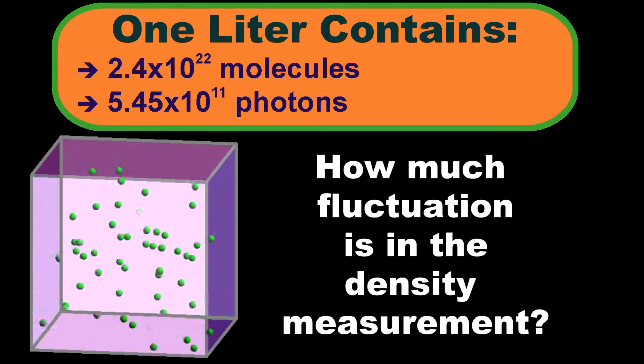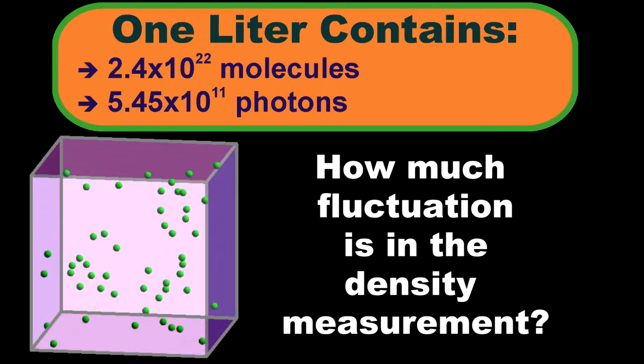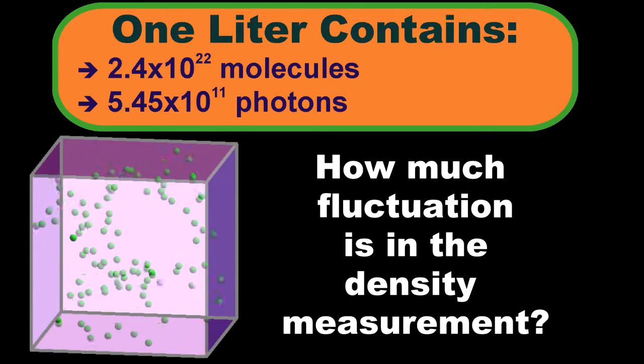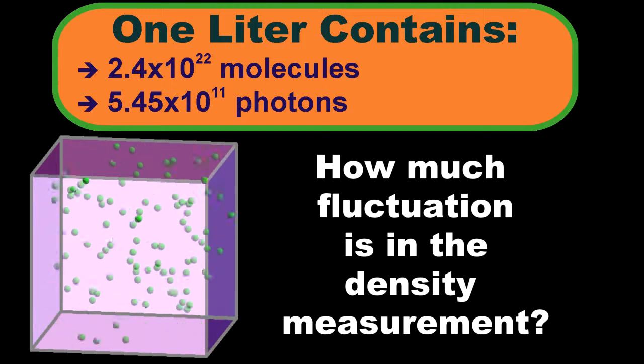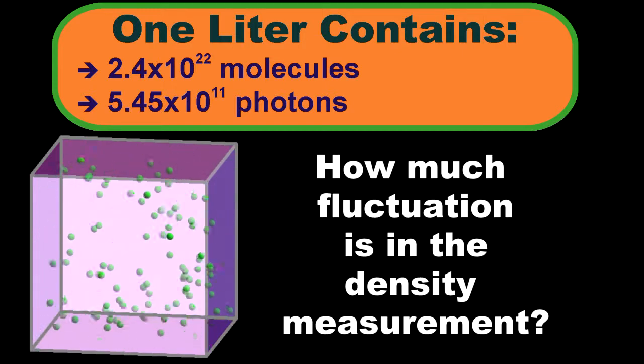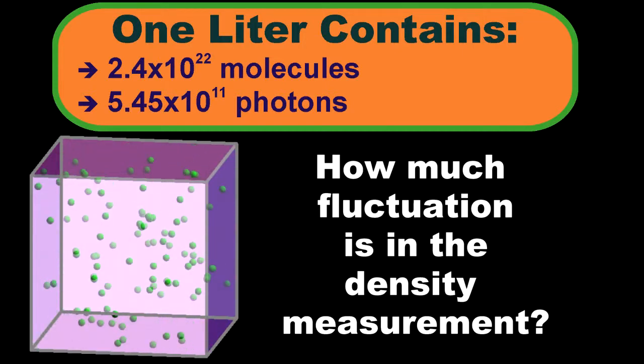Now let's compare how accurately we can know the number of particles in the two types of gases. That means how much the number fluctuates. The statistical word is the variance.